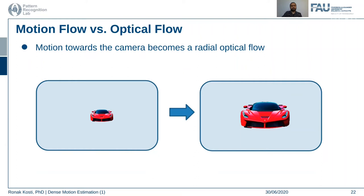Another aspect of motion is when movement is toward or away from the observer. In this case a car moving toward us generates a radial optical flow going outward away from the object. This kind of optical flow shows us that the object is probably approaching. In the reverse case, if the object moves away, the optical flow vectors will be directed inward. This kind of motion produces a radial optical flow.